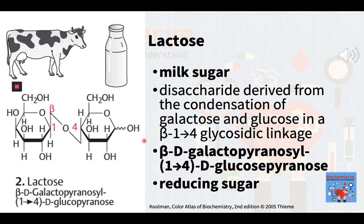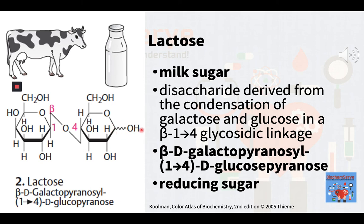The second disaccharide is lactose, commonly known as milk sugar. Lactose is the most important carbohydrate in the milk of mammals; cow's milk contains 4.5% lactose. Lactose is a disaccharide derived from the condensation of galactose and glucose, which form a beta-1,4-glycosidic linkage. Its systematic name is beta-D-galactopyranosyl-1,4-D-glucopyranose. The glucose can be in either the alpha-pyranose or beta-pyranose form, whereas galactose can only have the beta-pyranose form; hence alpha-lactose and beta-lactose refer to the anomeric form of the glucopyranose ring alone. Since there is a free hydroxyl group at C1 of the glucose moiety, lactose is also classified as a reducing sugar.